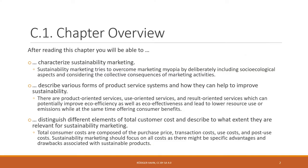So what will you learn in this chapter? After reading this chapter you will be able to first characterize what sustainability marketing specifically is — what makes marketing sustainable. You'll learn that sustainability marketing tries to overcome the often prevalent marketing myopia, which focuses very much on price and on selling products to consumers. Marketing that is more sustainable tries to go beyond that narrow perspective and deliberately includes socio-ecological aspects and considers the collective consequences of marketing activities.